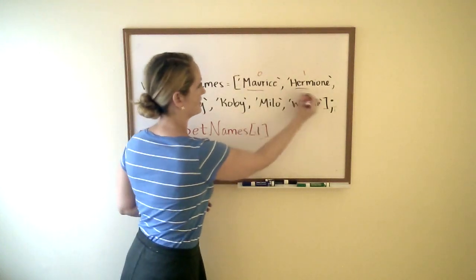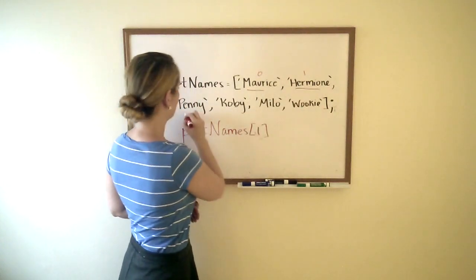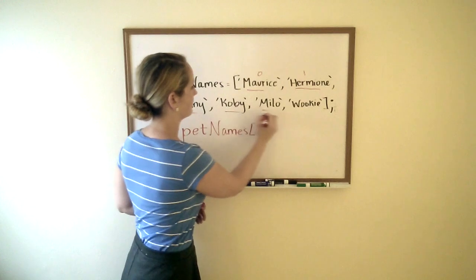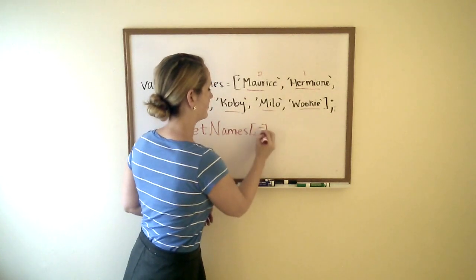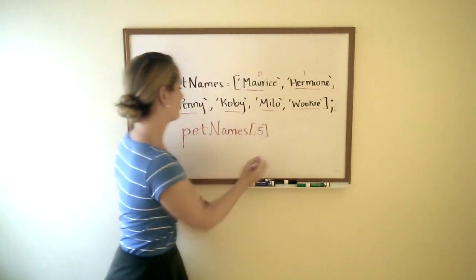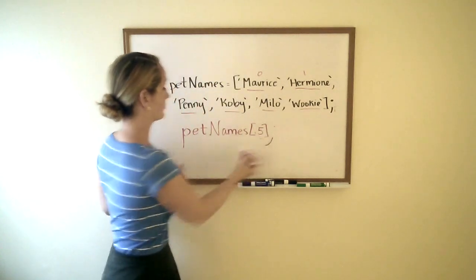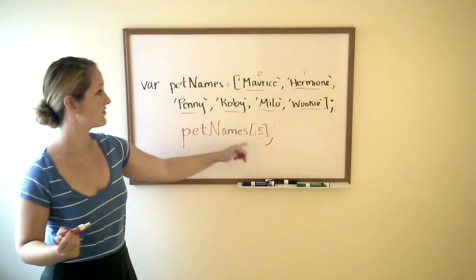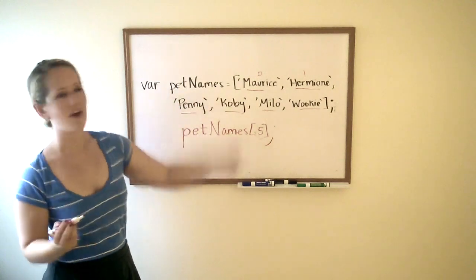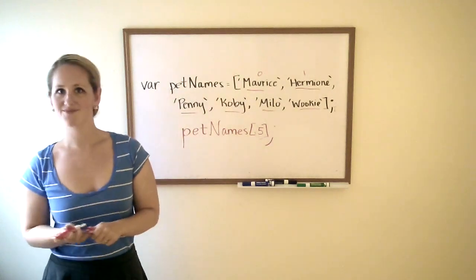So if we did want to see Wookiee, we count: two, three, four, five. If we had something like return pet names five, that would go to Wookiee.